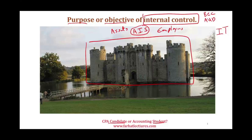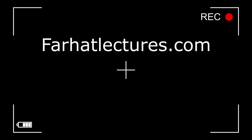What is this fort protecting us from? It's protecting us from this group of people — representing misstatements, errors, fraud, and theft (which is misappropriation). Misstatements, errors, fraud, and theft are a threat to our assets and to our accounting information system. They'll try to convince our employees to commit fraud, steal money, or fudge the financial statements. The fort helps us protect our assets, the accounting information system, and the employees.